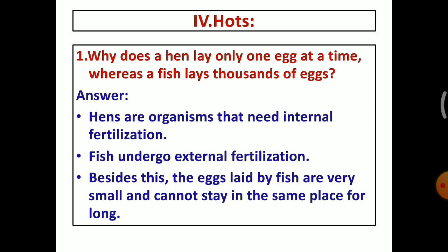The answer is hens are organisms that need internal fertilization. Fish undergo external fertilization. Besides this the eggs laid by fish are very small and cannot stay in the same place for long. You know that the fish is living in river water or sea water or anything. So when it lays eggs, that egg cannot stay in the same place for long time.